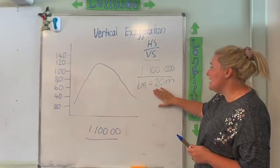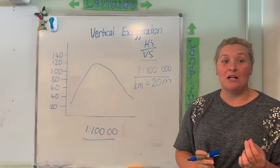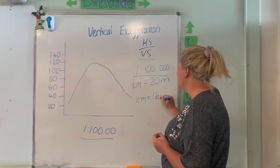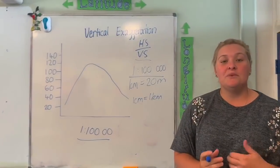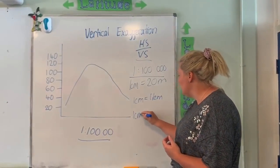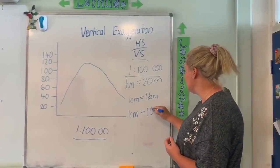Now because we've got 20 m on the bottom here, we need to work with this top number, 1 is to 100,000 and get that into metres as well. So we know here that 1 cm equals 1 km. And to go from kilometres to metres, we simply times by 1,000. So what we're going to end up with up here is that 1 cm on this map, on the horizontal scale, is equal to 1,000 metres.